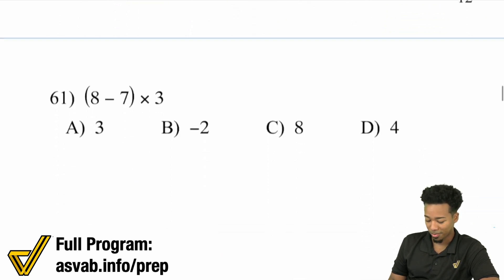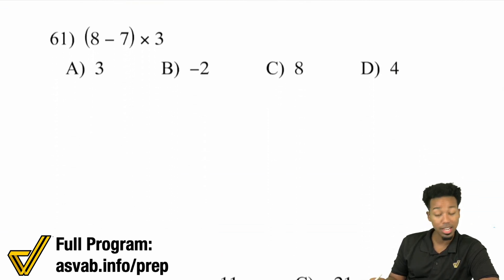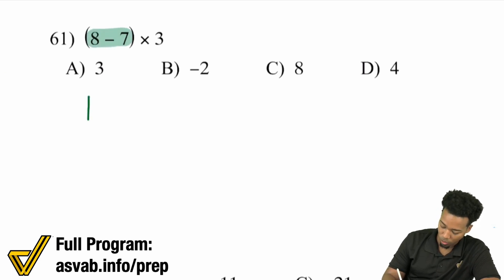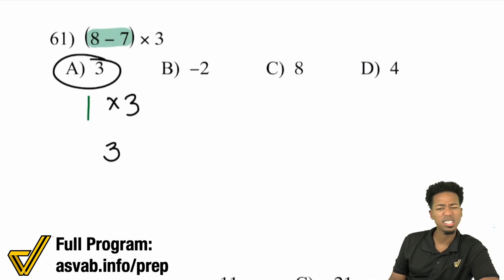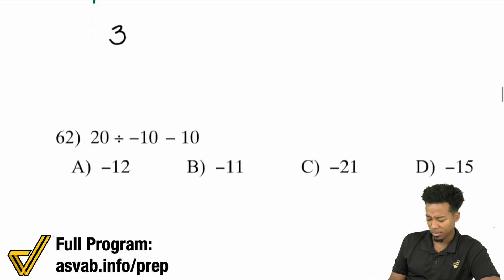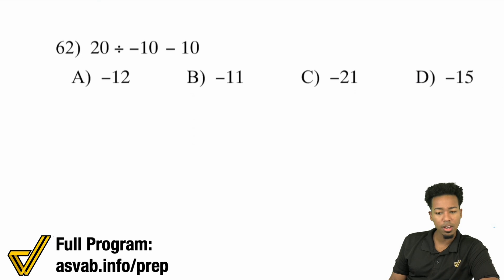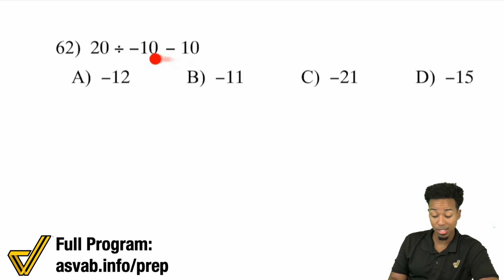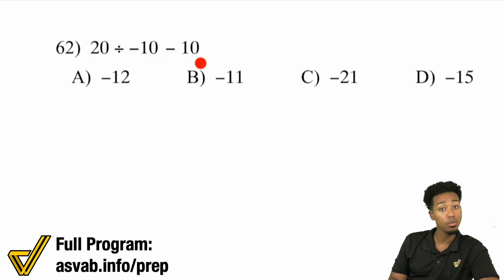Number 61: we have (8 minus 7) times 3. 8 minus 7 is going to give me 1, and 1 times 3 gives me 3. Super straightforward. Number 62: we have 20 divided by negative 10 minus 10. Don't get tricked here — you might be tempted to say negative 10 minus 10 is negative 20, and 20 divided by negative 20 is negative 1. Nope — wrong.